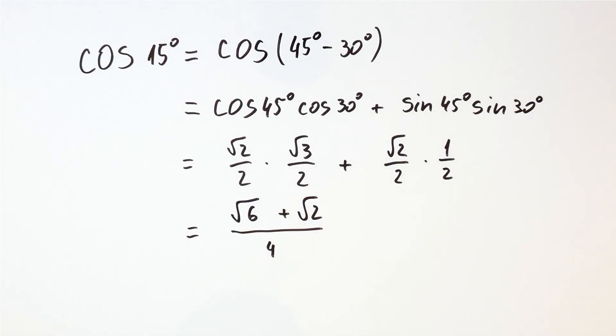Finally, by putting 45 degrees and 30 degrees into that formula, we got that the cosine of 15 degrees is equal to the square root of 6 plus the square root of 2 over 4.